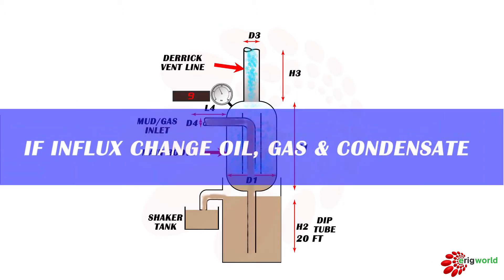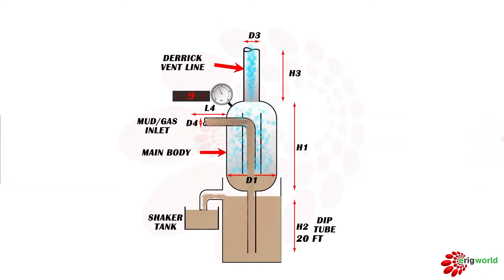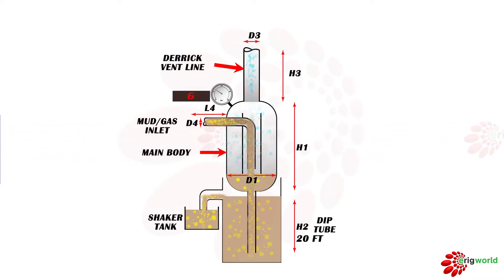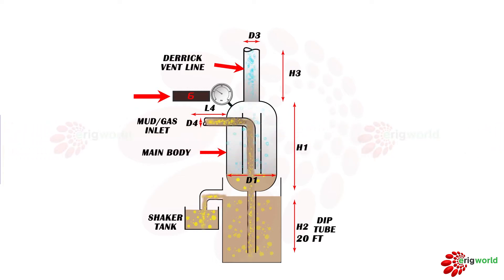If the influx changes to a combination of oil, gas, and condensate, let us understand what will happen to the build-up pressure of the MGS. Since oil and condensate are also coming in along with gas, the percentage of gas in the system will decrease. This decrease in gas percentage will cause a reduction in the build-up pressure, because all the pressure built up in the MGS is due to gas. So if the influx changes from pure gas to oil, gas, and condensate, the build-up pressure will decrease.